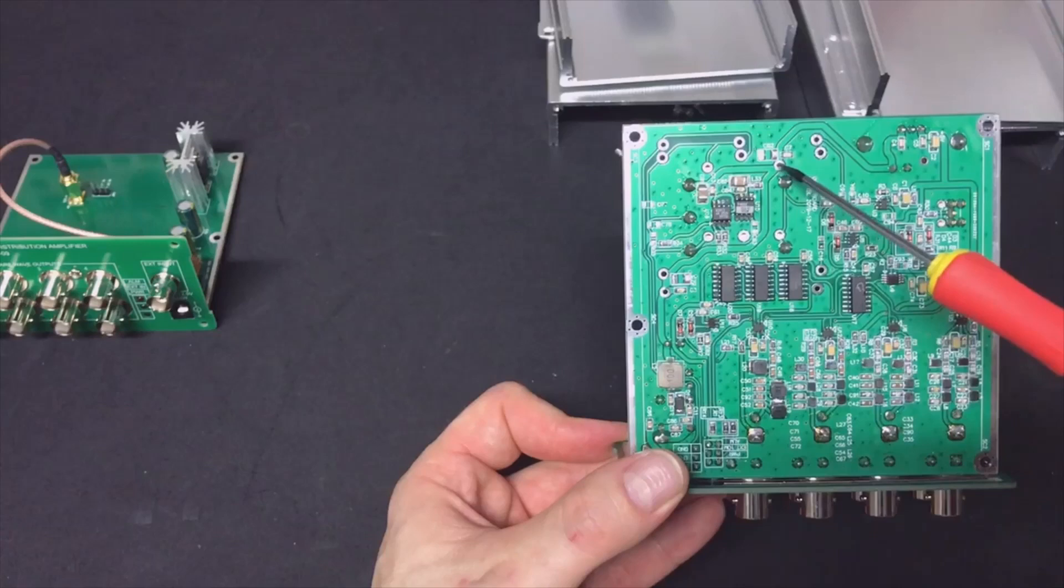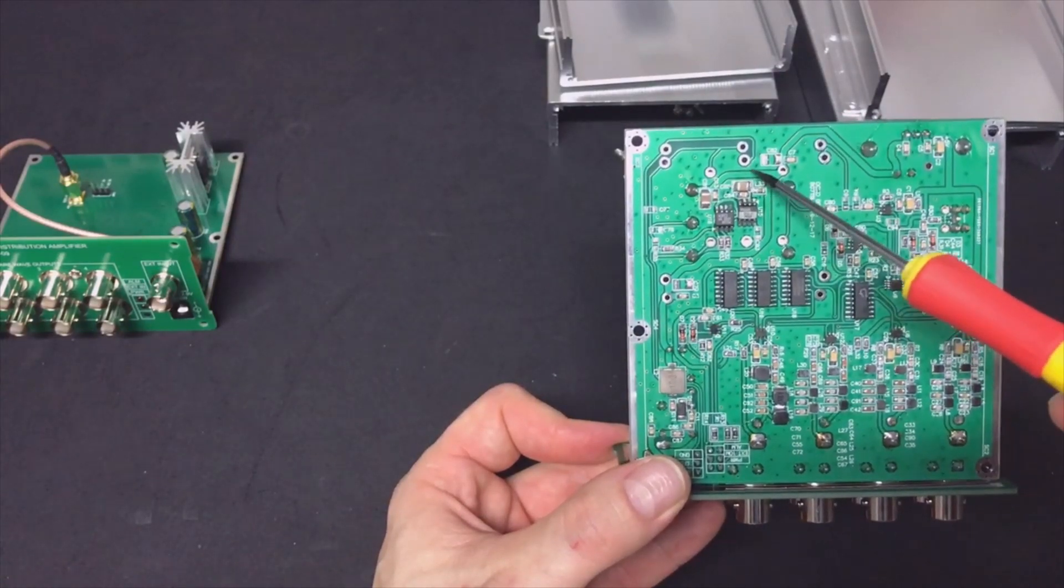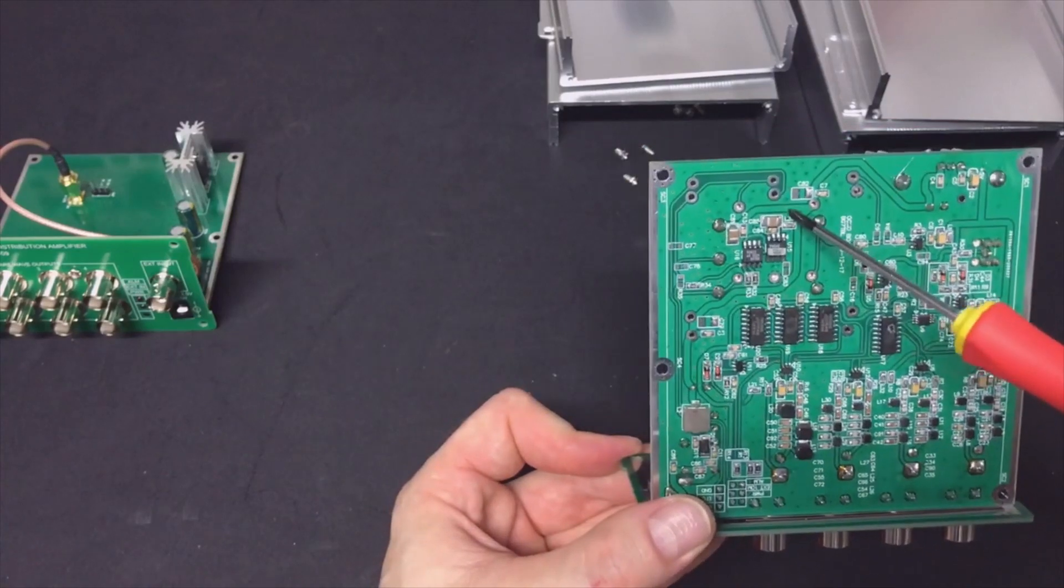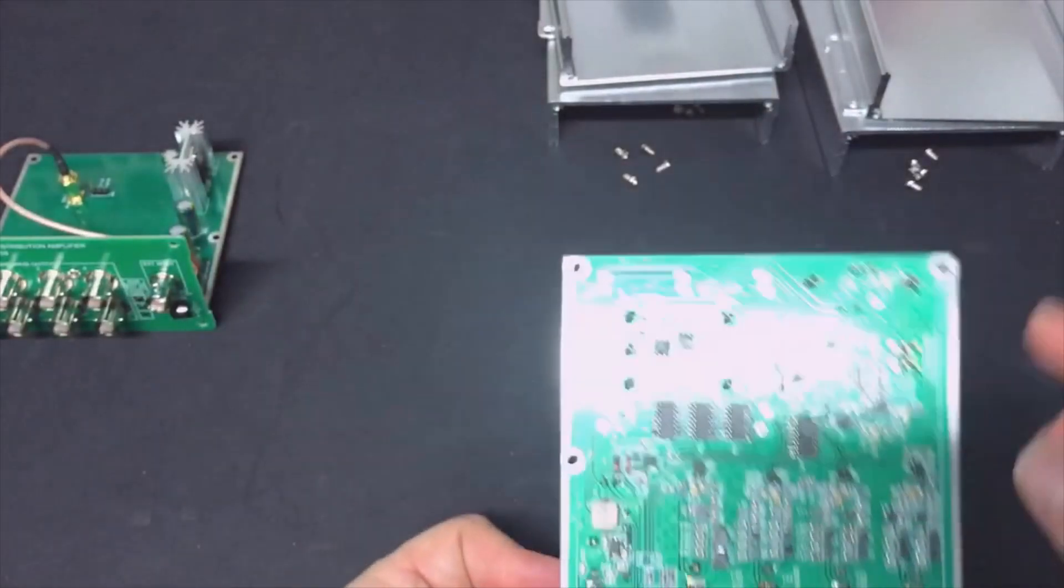And here is a very big trace, this one. This is probably the power and it goes here. Yeah, clear that is the power. So what we can do, we can just cut this trace.